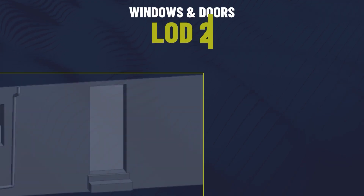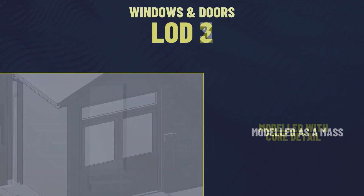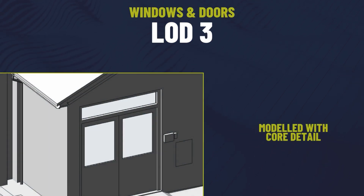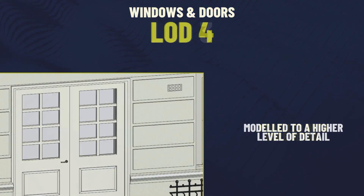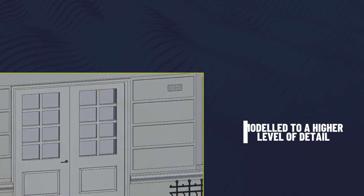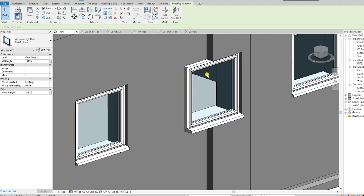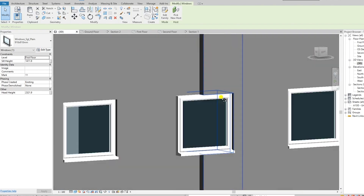Windows and doors evolve across LODs. At LOD2 they're simple structural openings. By LOD3, dimensions and frame details are added. LOD4 incorporates glazing types, hardware and operational detail. These higher-detail features are essential for energy modelling, compliance with regulations and even for aesthetic decisions.